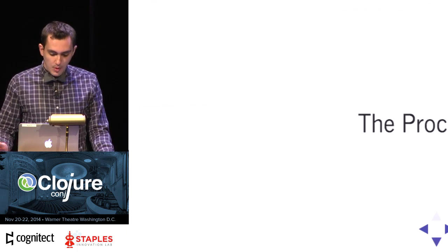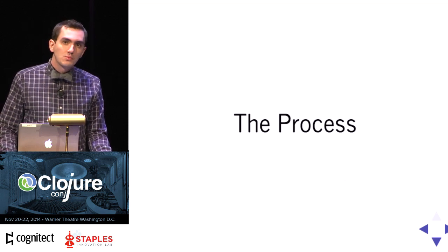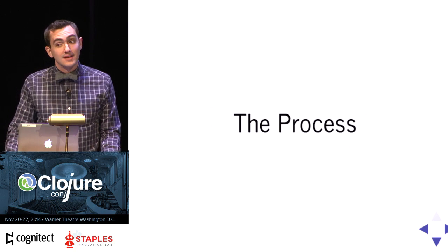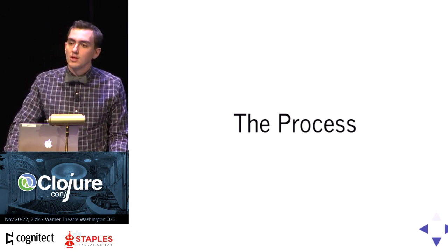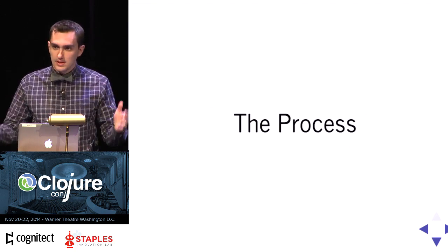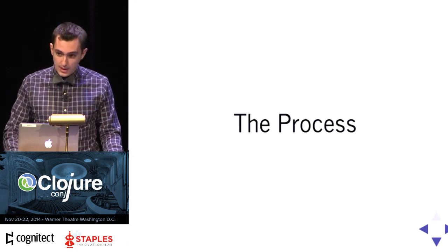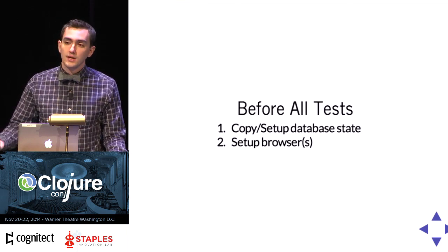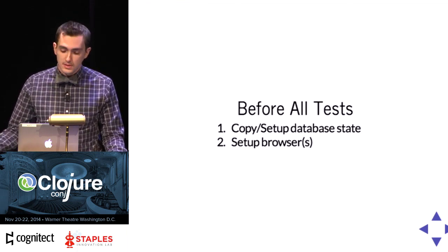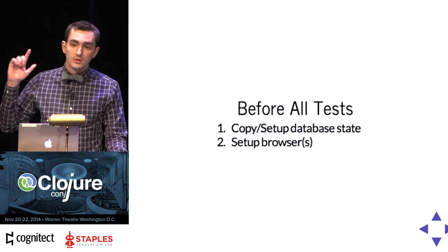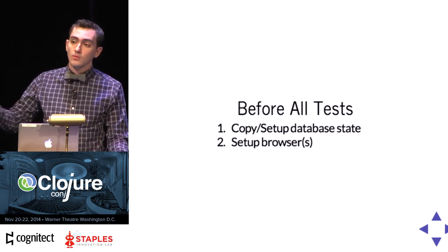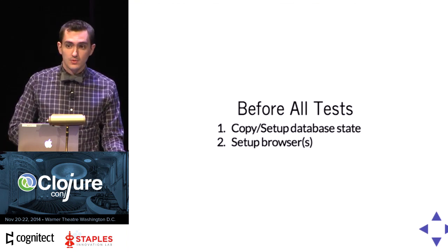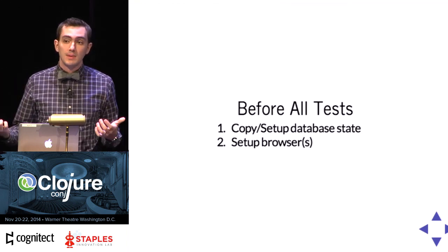So we're going to have a process, because adding browsers doesn't exactly make life easier or simpler or faster. At the very beginning, before running anything — you could do it in multiple ways, I use a clojure.test fixture once to do this — you need to do two things. You're going to need to get your database where you want it to be. I use fixture data done way before this runs and snapshot it into test memory, so I can reuse that later for generators and to get a consistent environment. And you're going to need some browsers — you don't want to start and stop browsers because it's not the fastest thing in the world.